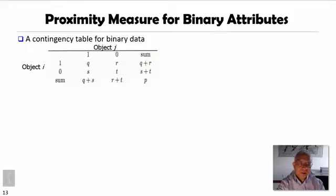For binary variables, we usually represent their occurrences using contingency table. Suppose we have two objects, i and j. The number of times they both appear could be q, they both missing could be t cases, i appears and j does not, there are r cases, and i does not appear and j appears s times.